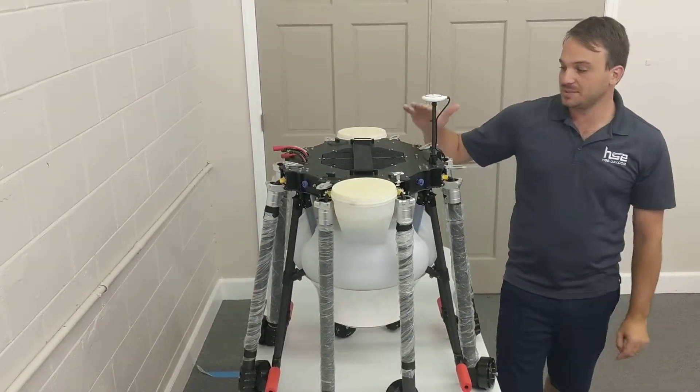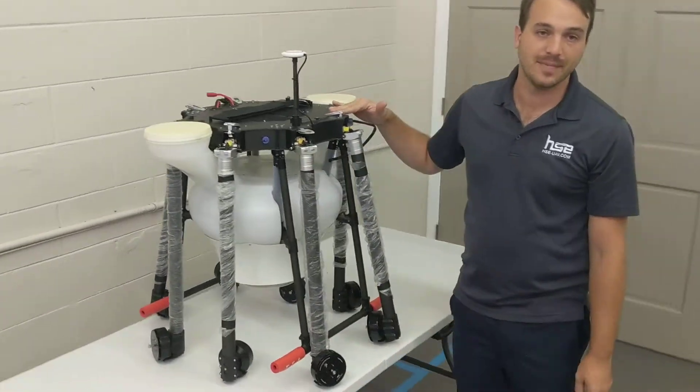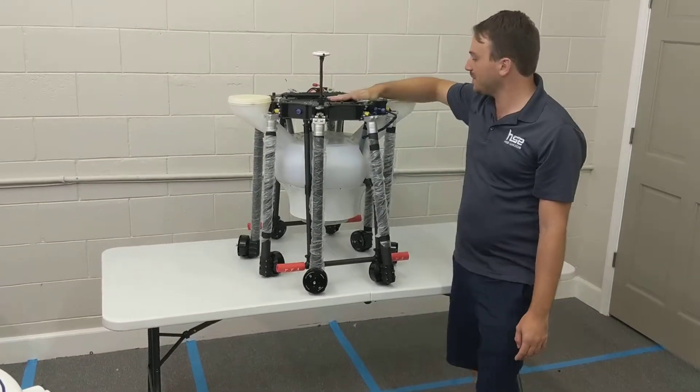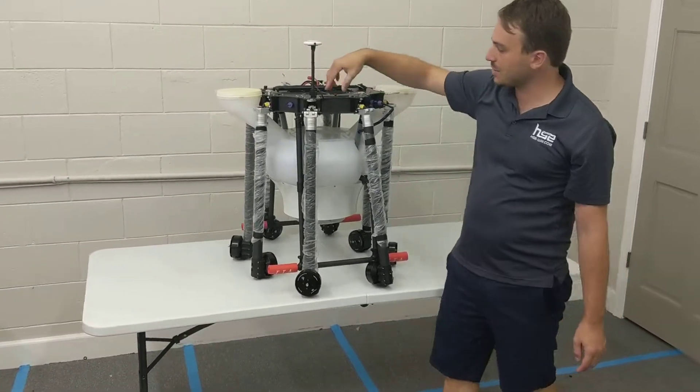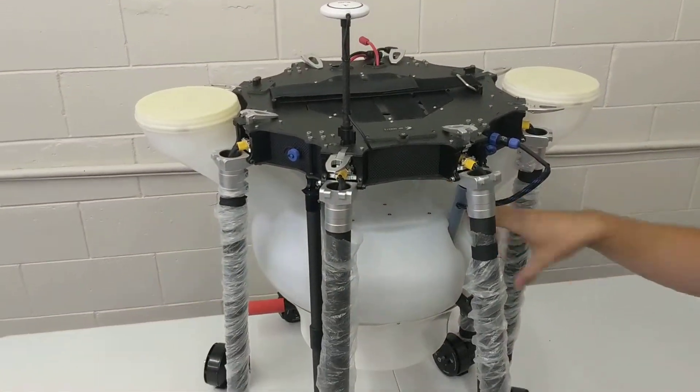And this model is able to be switched out with a 20-liter liquid sprayer in about 5 minutes worth of time. Very simple to do, quick disconnects and all the connections. The tank simply drops down and you can replace it with a liquid tank.